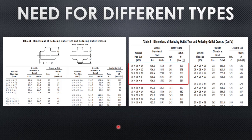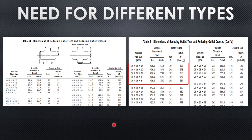For example, for a 16-inch header size, the maximum reduction available with reduced T is only down to 6 inches. So if you need to take a 2-inch connection from a 16-inch header, you must use weld outlet. Similarly, for an 18-inch header, the maximum reduction is only down to 8 inches — if you want a 4-inch connection from an 18-inch pipe, reduced T is not available and you must use weld outlet. This is the fundamental reason why weld outlets are used for taking branch connections.